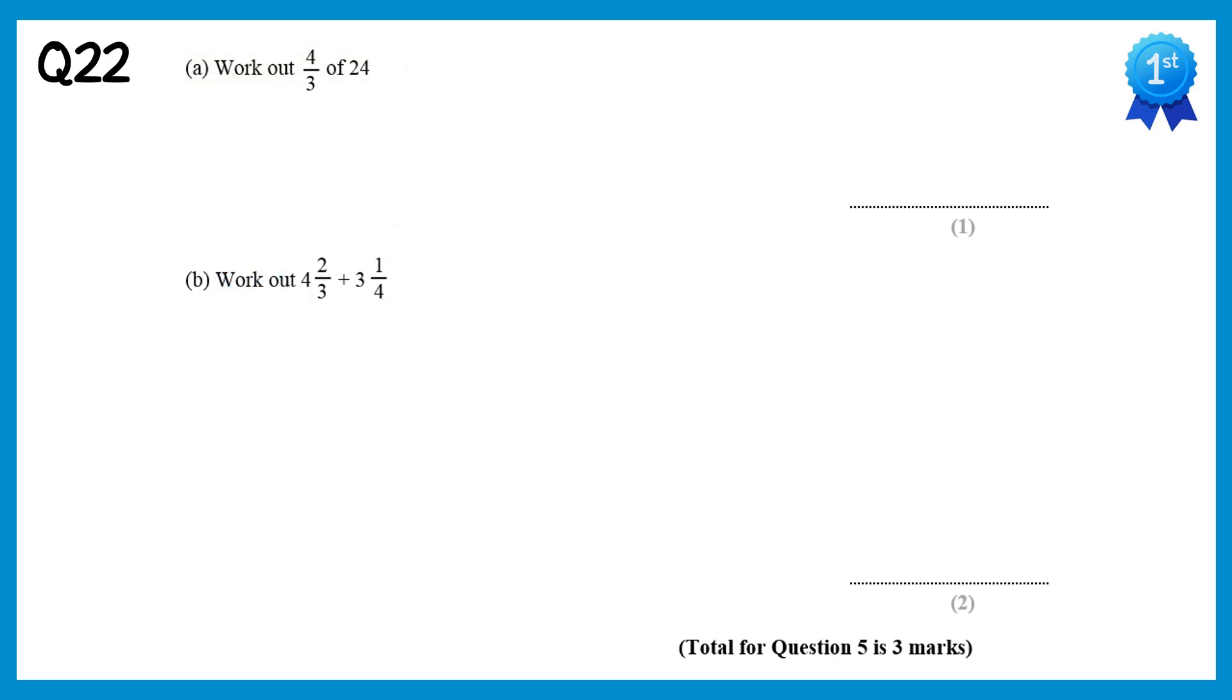To work out 4 thirds of 24, we first of all divide by the bottom number, so 24 divided by 3, which gives you 8, and then multiply by the top number, so 8 times 4 is 32.